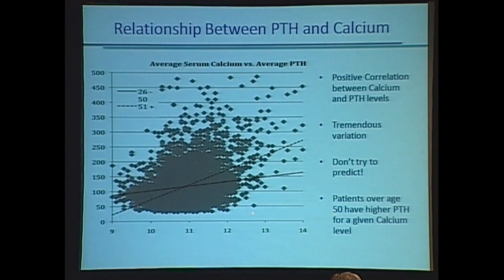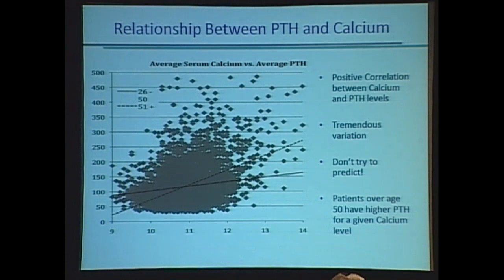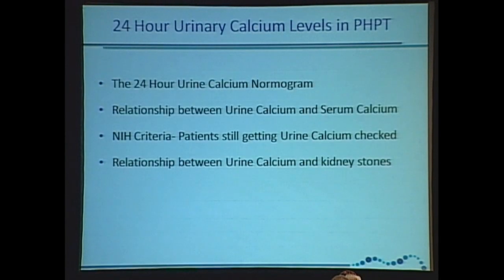It's not necessarily true that if your patient's got a calcium of 11.5, they have a parathyroid hormone level of 250. And vice versa — if their calcium is 10.5, they can have a parathyroid hormone level of 200. Don't try to predict — you'll just make more work for yourself.